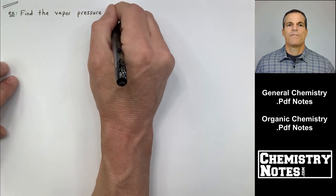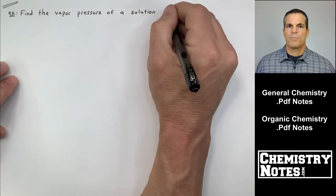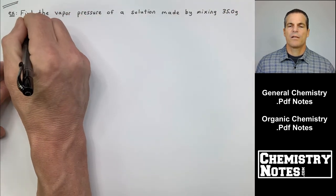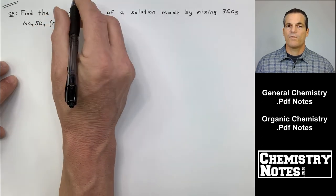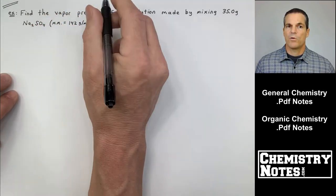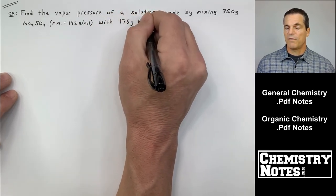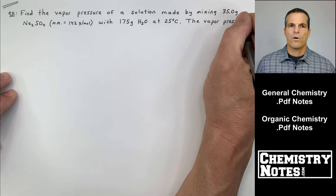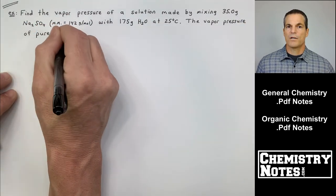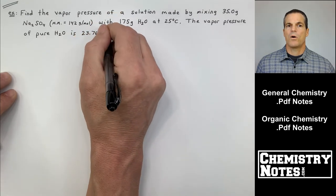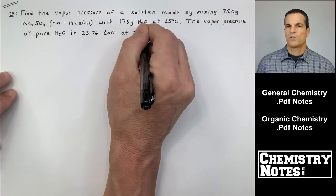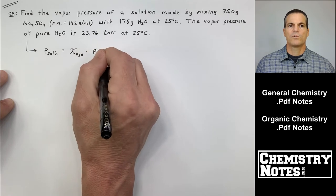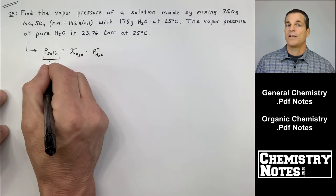So this practice problem says find the vapor pressure of a solution. That is going to be P_solution. Find the vapor pressure of a solution made by mixing 35.0 grams Na2SO4. And then they give us the molar mass of Na2SO4. You usually have to use it if they give it to you. Not always. So find the vapor pressure of a solution made by mixing 35 grams of Na2SO4 with 175 grams of water at 25 Celsius. The vapor pressure of pure H2O is 23.76 torr, 25 Celsius, same value as in the last problem. Well, we're looking for vapor pressure of solution. So Raoult's law, we can at least write that down and see if it's going to be useful to us in this particular problem.